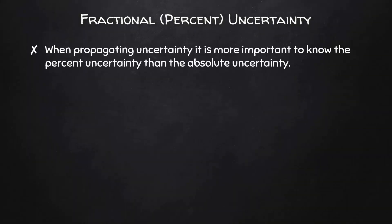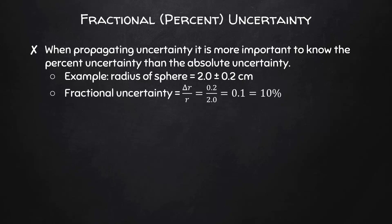When propagating uncertainty in calculations more complicated than adding or multiplying by a constant, it is more important to know the percent uncertainty than the absolute uncertainty. As an example, let's imagine that the radius of a sphere is measured to be 2.0 ± 0.2 centimeters. The fractional or percent uncertainty is equal to the uncertainty divided by the value, in this case 10%.